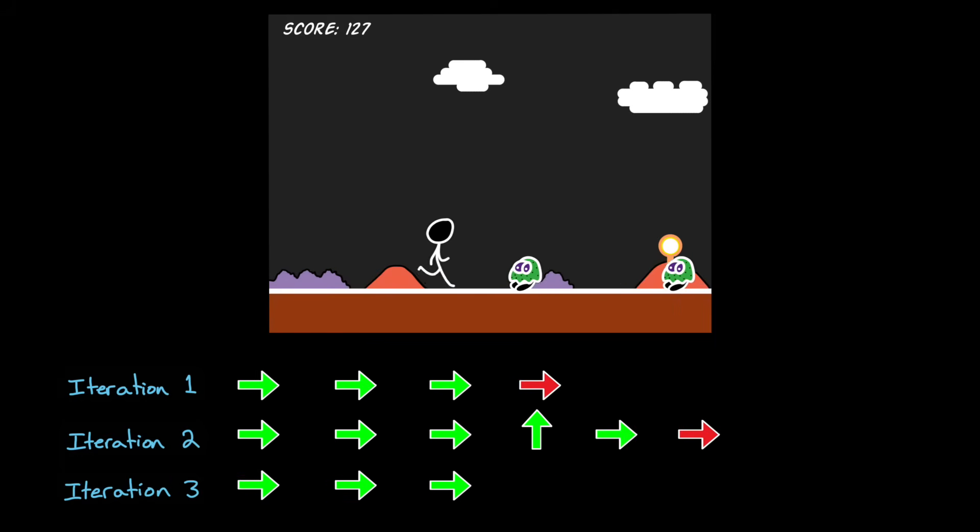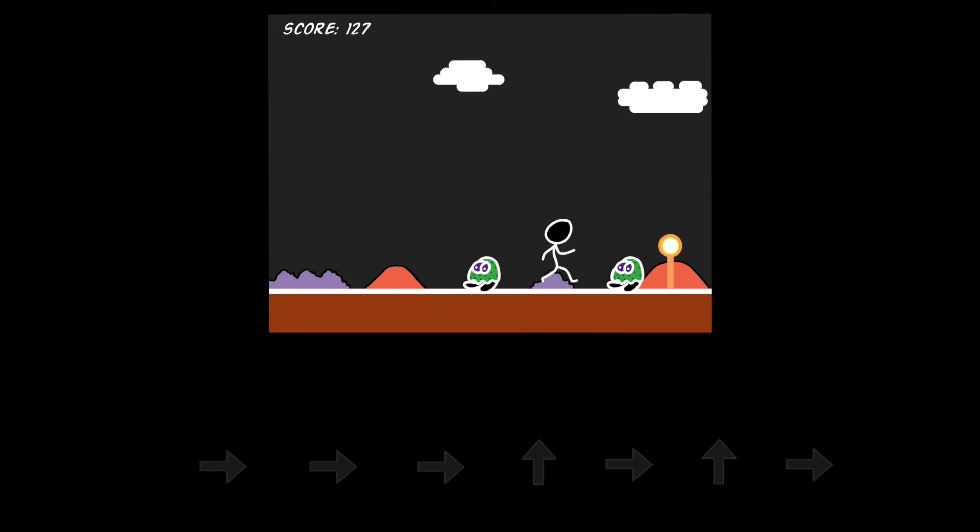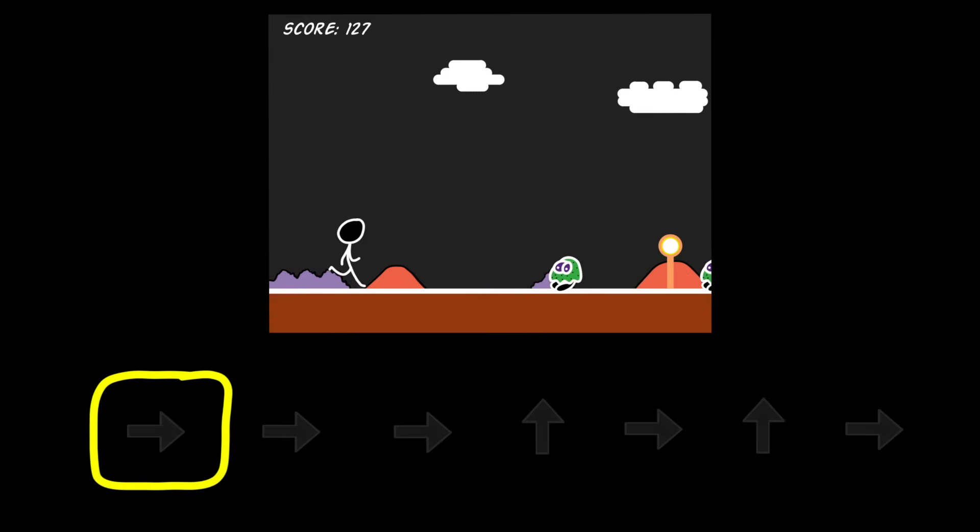And if the environment is always the same, for example, the bad guys always appear in the same place at the same time every time that you start over, then with trial and error, you could learn the exact sequence of commands needed to beat the game.